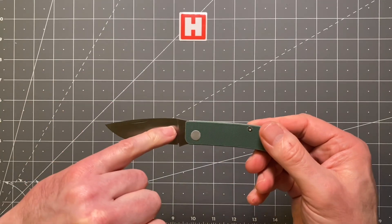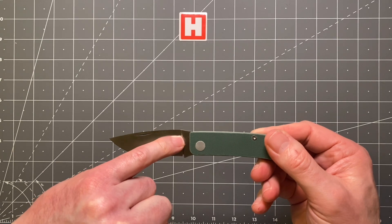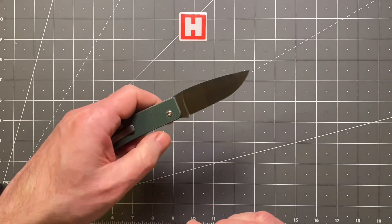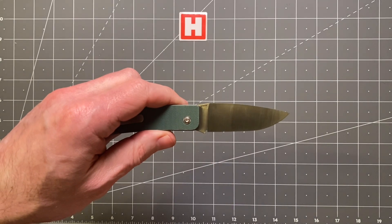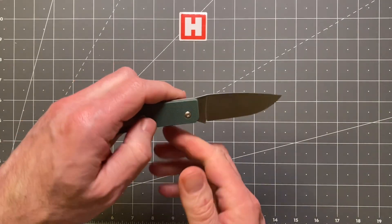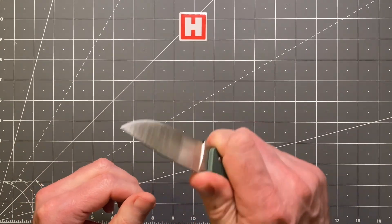It's got a little emblem, Manly, in the middle on the front just there. On the other side, look at that, S90V. That's a super steel and let me tell you it's super sharp.